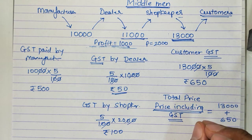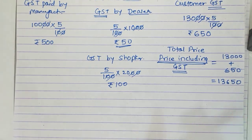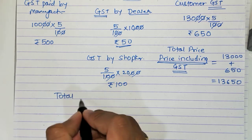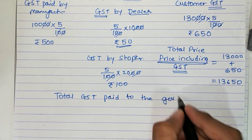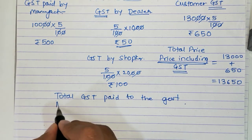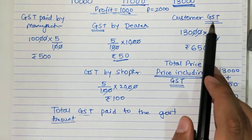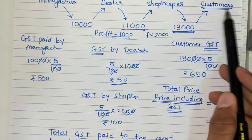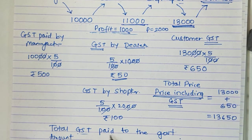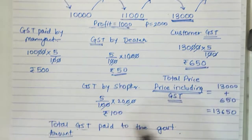Now let's understand some more terminology. If they ask you the total GST paid to the government, or amount of GST paid to the government, without specifying which person - dealer, manufacturer, or customer - it is understood that total GST paid to the government means the GST paid by the customer. So in our example, the customer's GST of Rs. 650 is the total GST paid to the government.